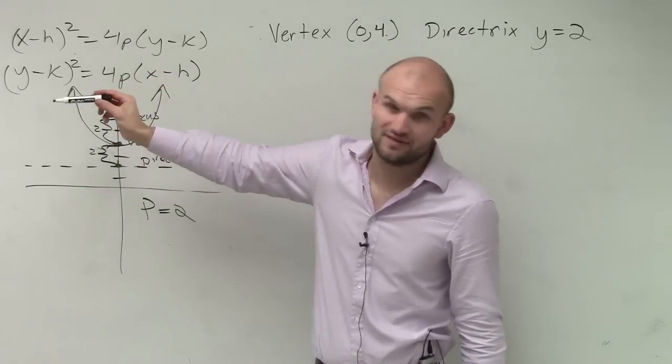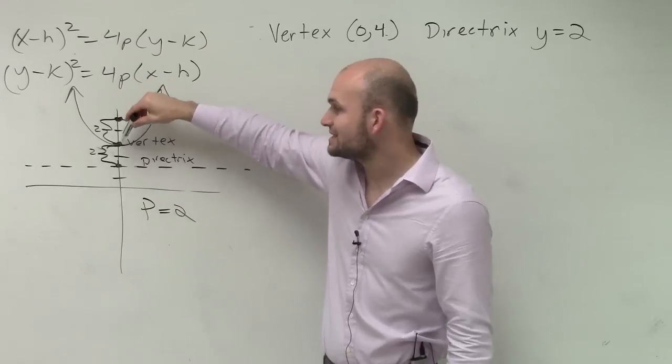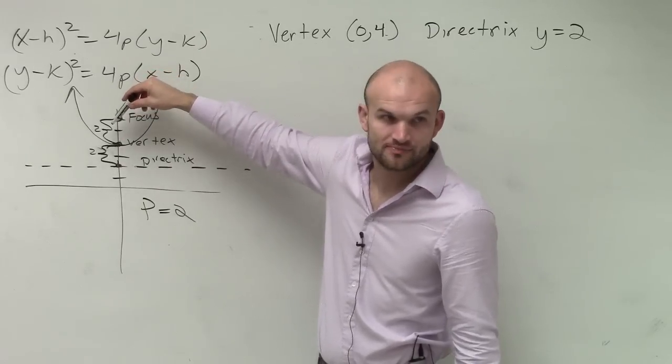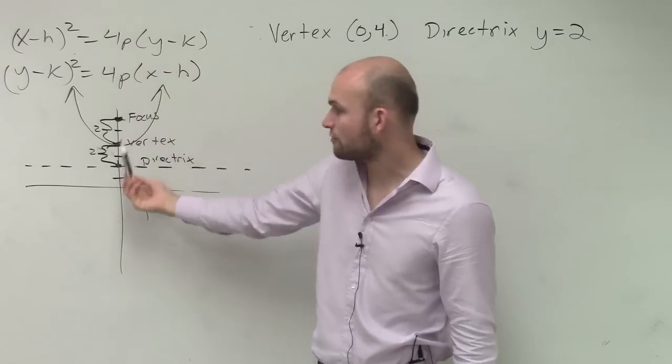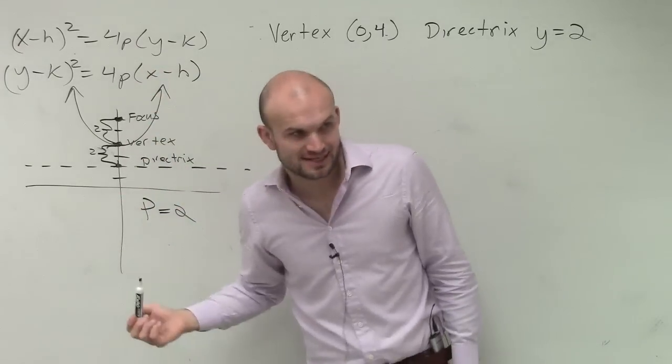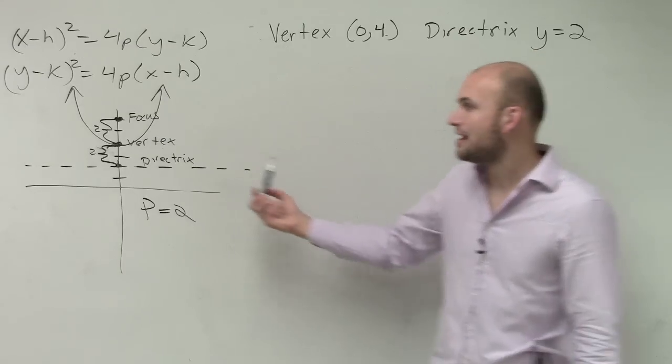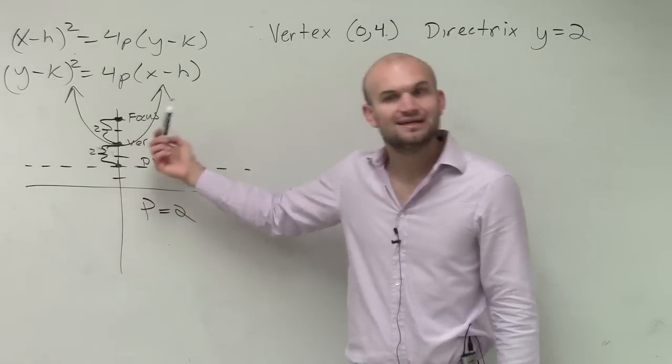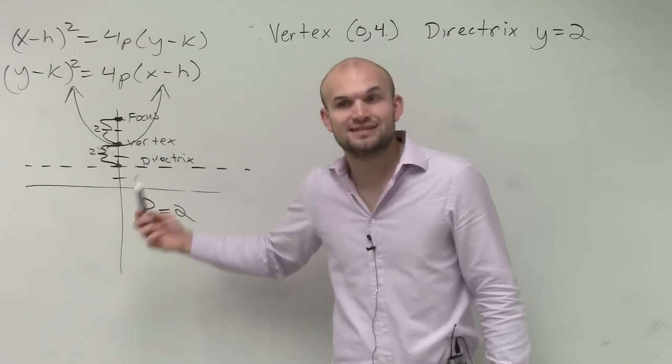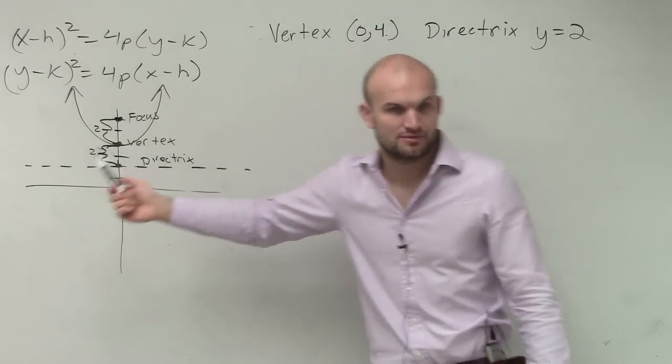But it's the distance from your vertex to your focus. It doesn't matter if it's vertical or if it's horizontal, it's that distance from your focus to your vertex, or your vertex to your focus. And then remember to go from your vertex to your directrix is going to be that exact same distance in the opposite direction. Okay?